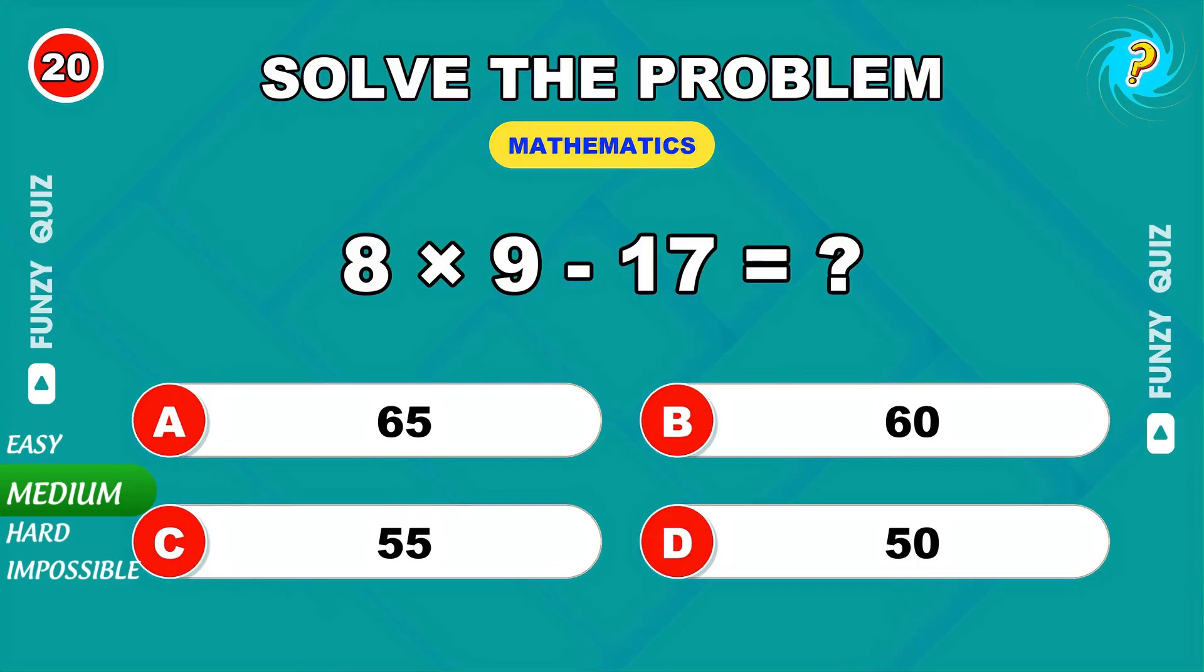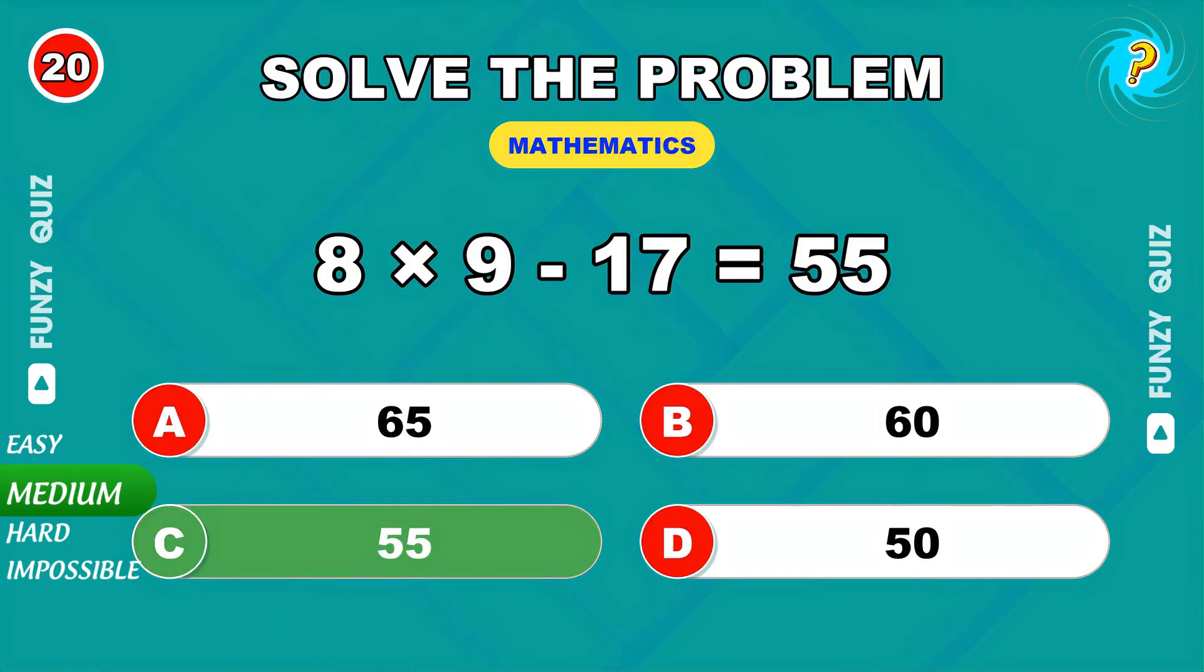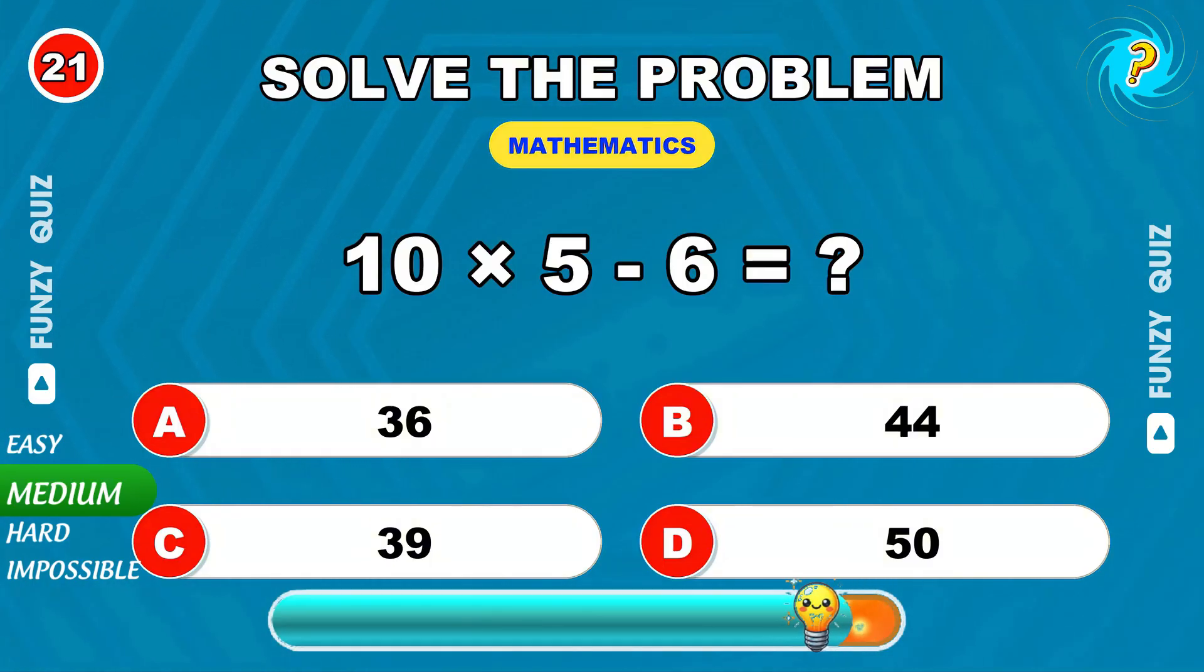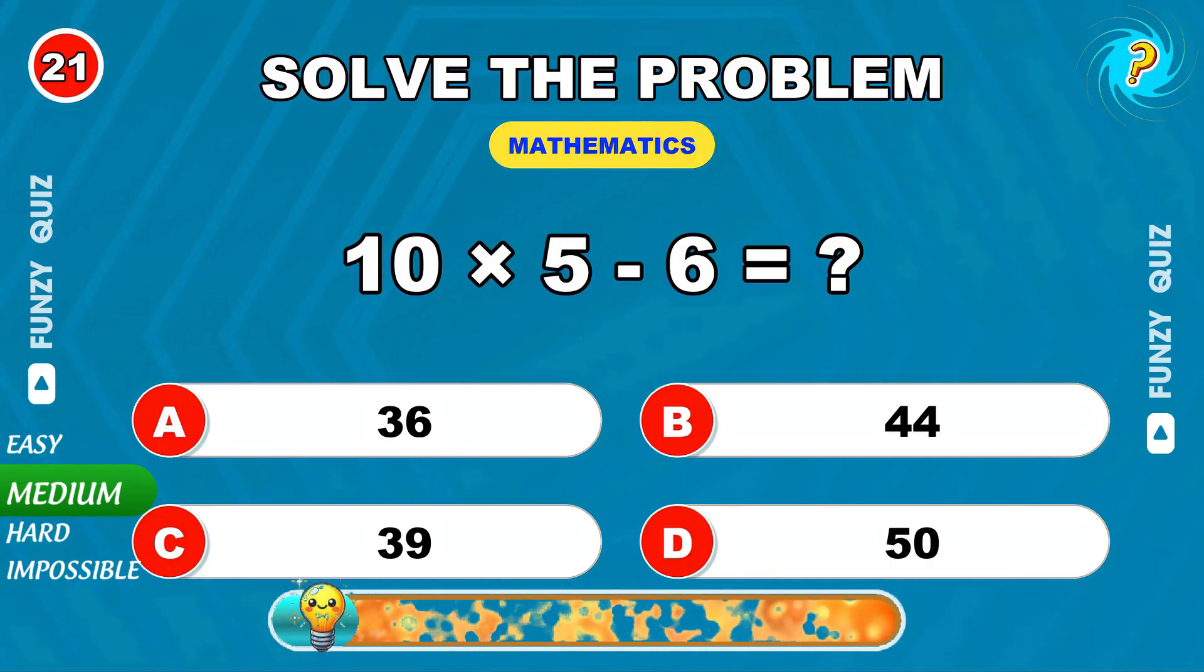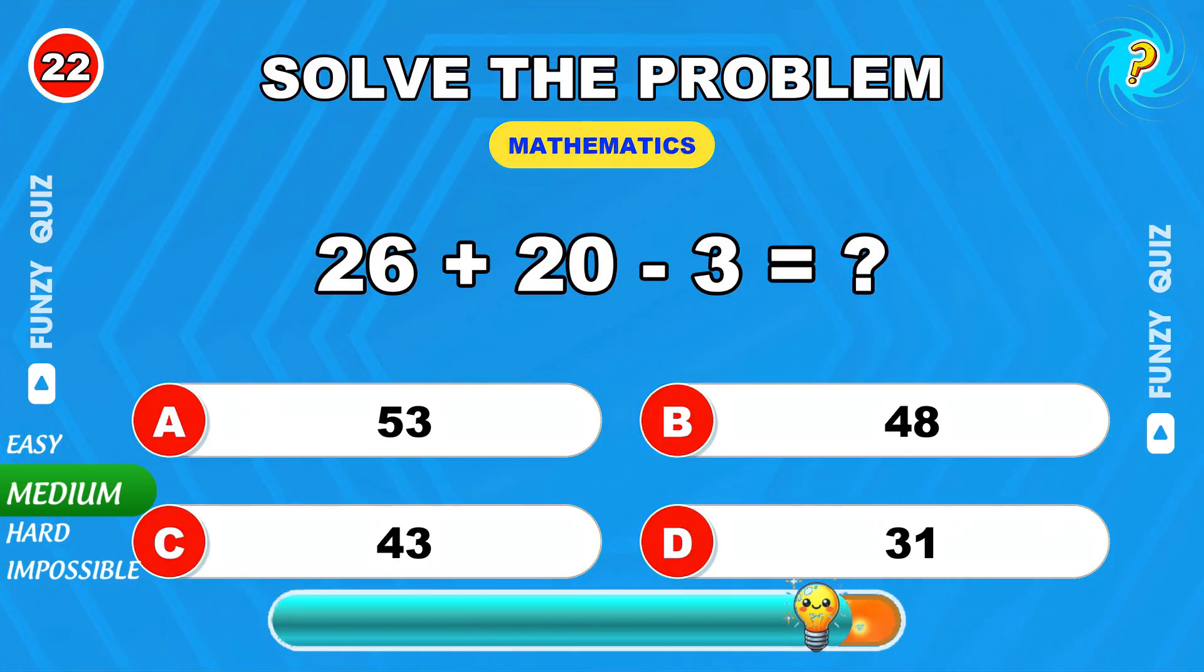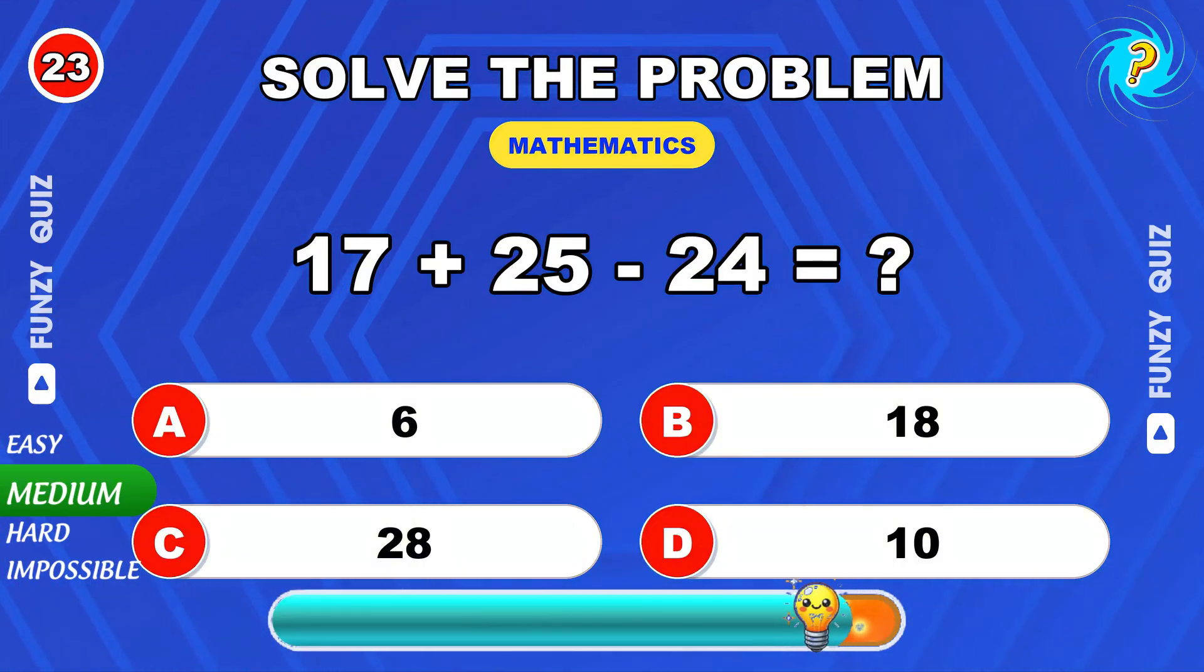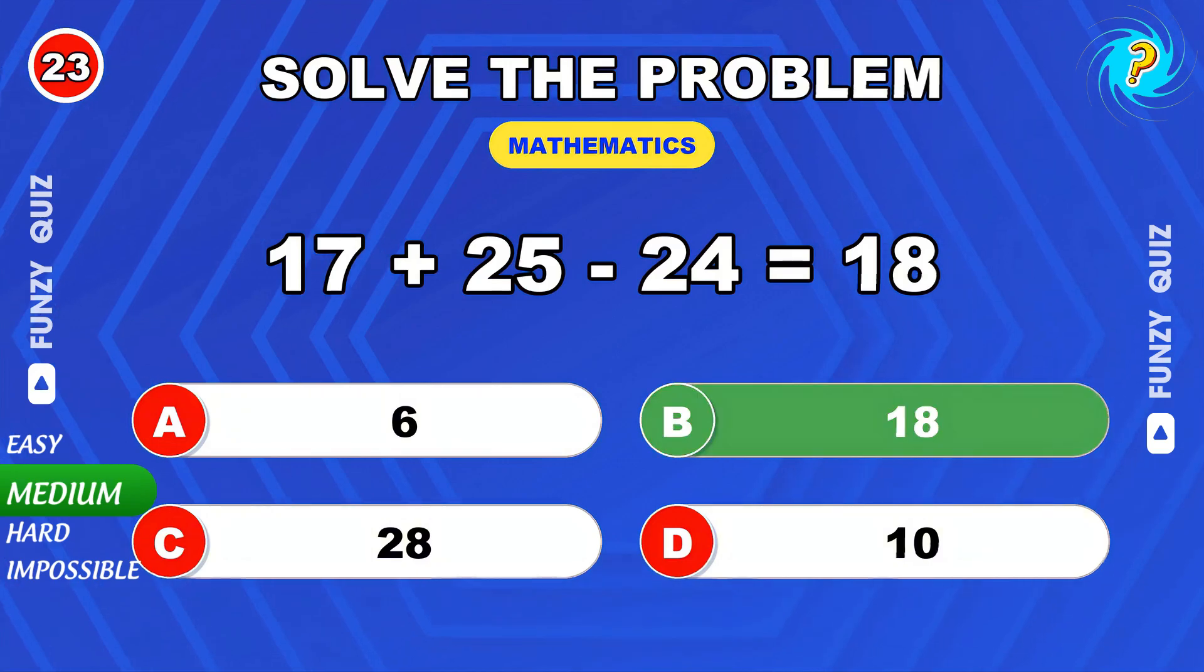8 times 9 minus 17. 55. Well calculated. 10 times 5 minus 6. 44. 26 plus 20 minus 3. 43. 45.